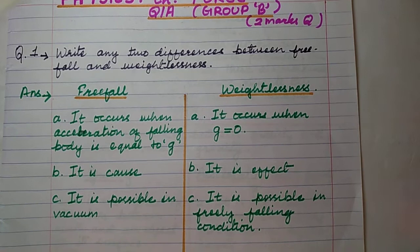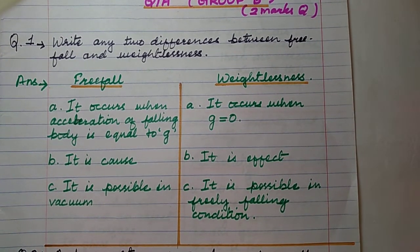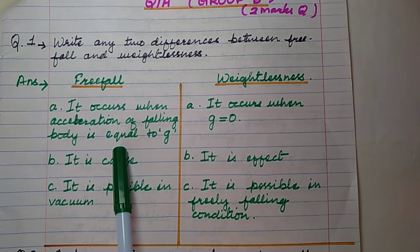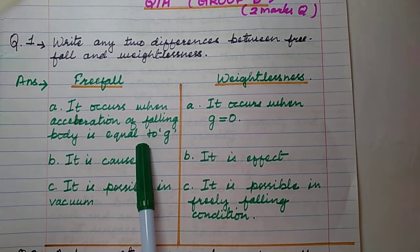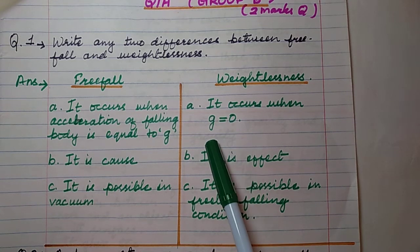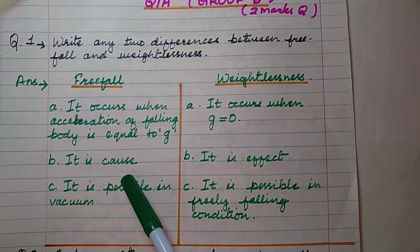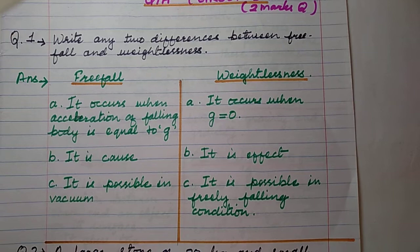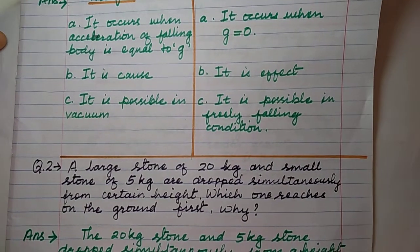Write any two differences between free fall and weightlessness. Free fall occurs when the acceleration of a falling body is equal to g — that is, equal to acceleration due to gravity. Weightlessness occurs when acceleration due to gravity becomes zero, i.e., g = 0. Free fall is the cause; weightlessness is the effect.